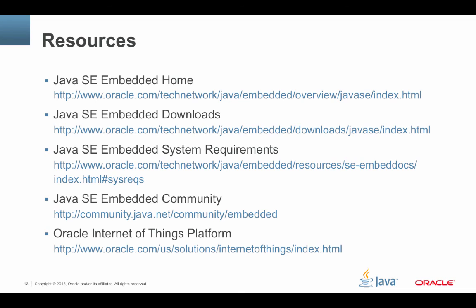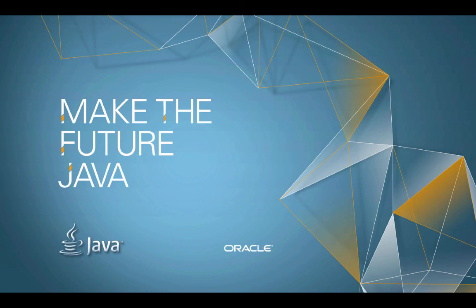Here are some resources for more information: Java SE Embedded Home, where you can find downloads; the system requirements for Java SE Embedded; the Java Embedded Community, which covers both ME and SE and has information for embedded platform developers; and a new website called the Oracle Internet of Things Platform, which provides a cross-section between the ME and SE platforms. Thanks for listening to this screencast, and remember — make the future Java.